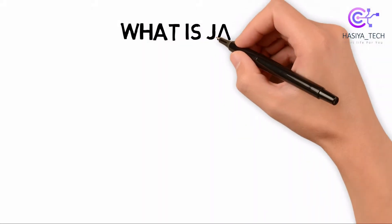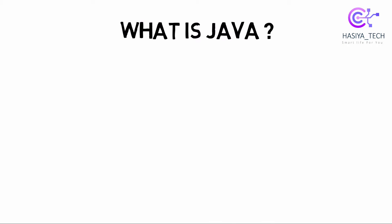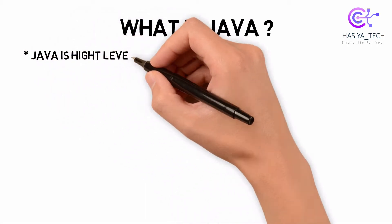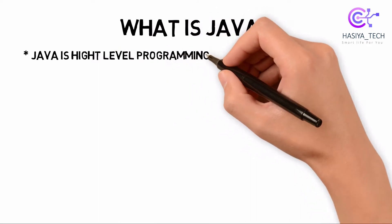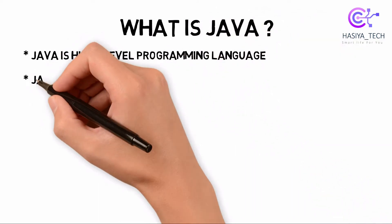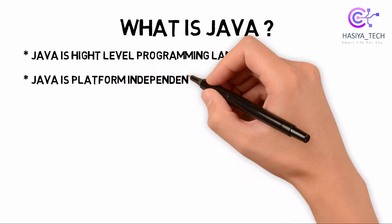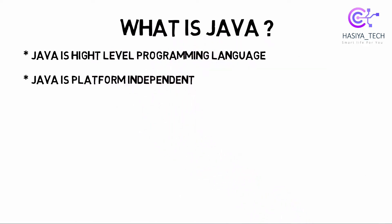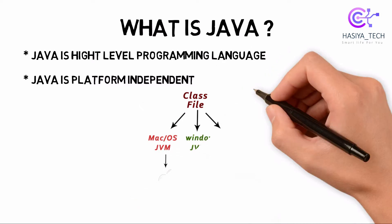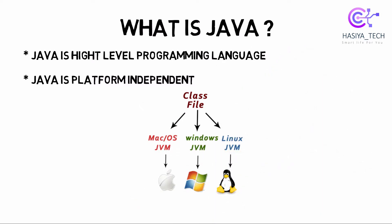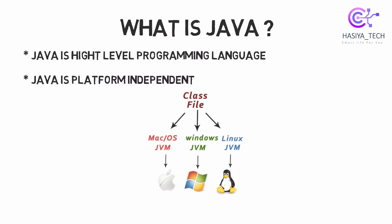What is Java? Java is a high-level programming language. It runs on the operating system platform independently — you can use it on different operating systems.